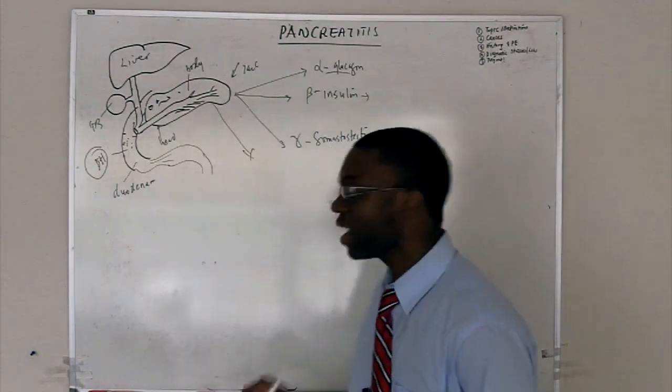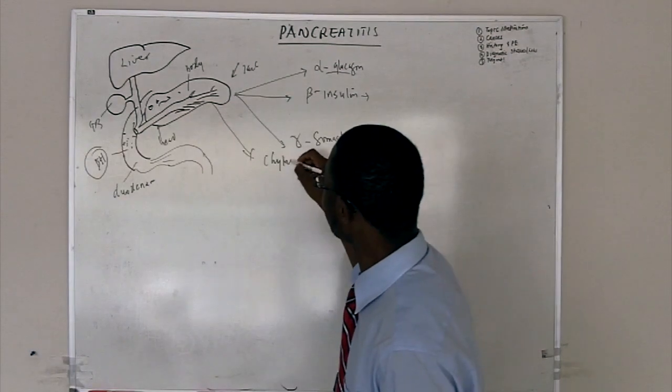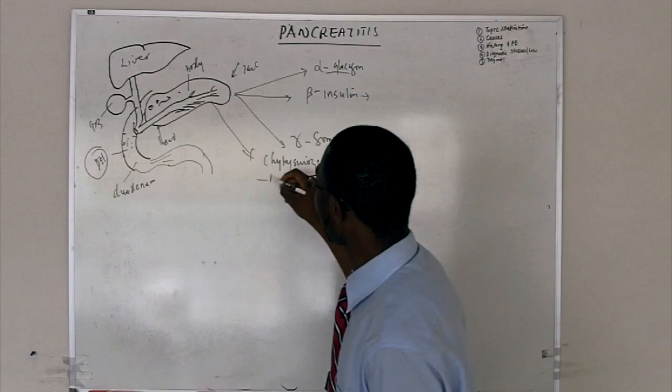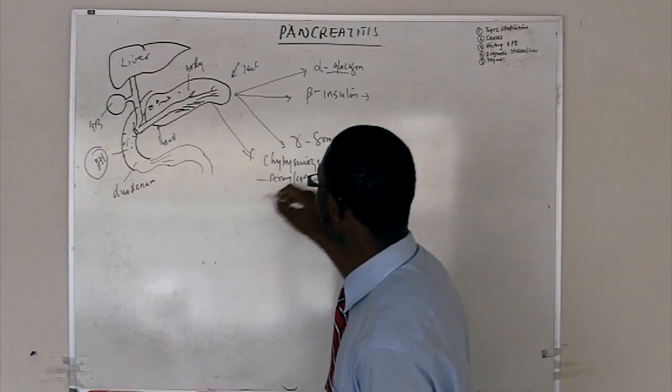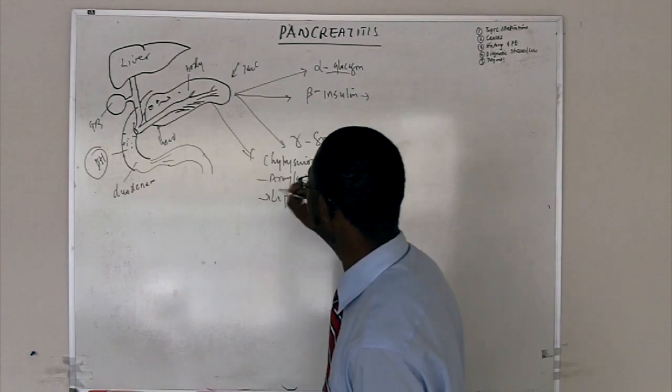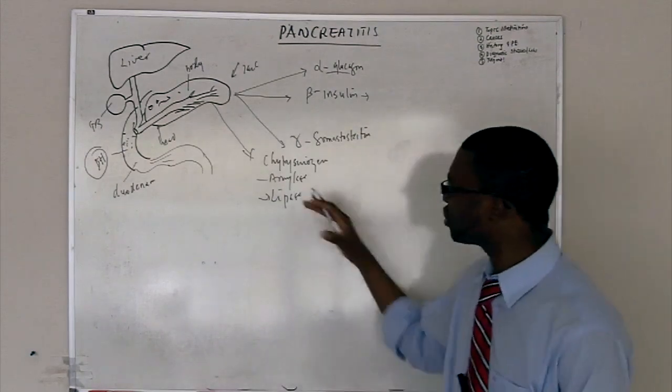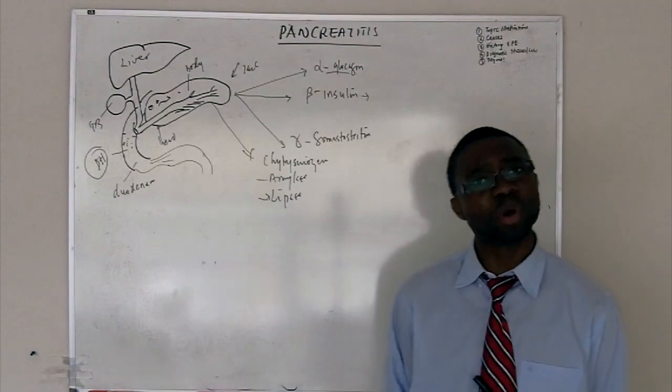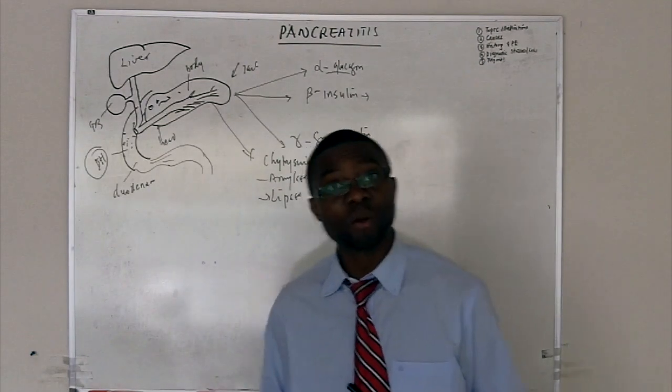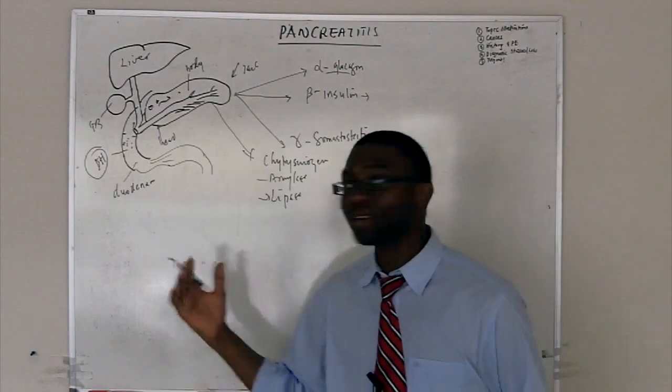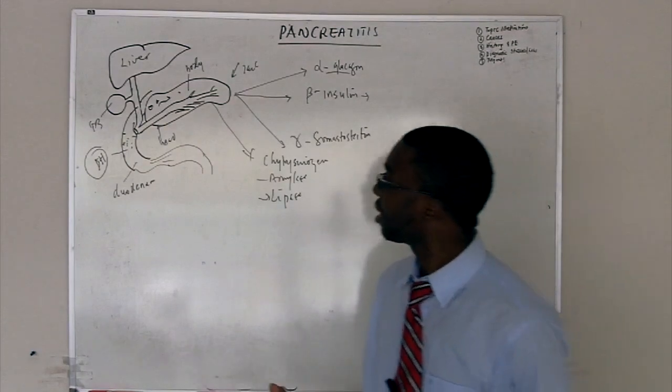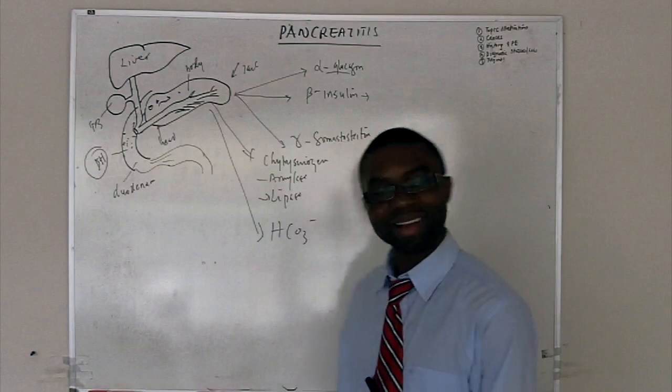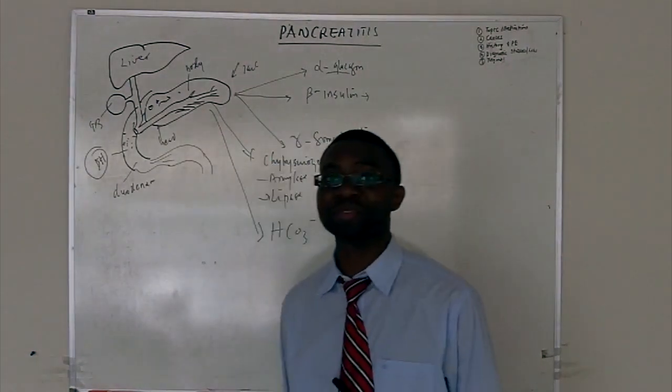Aside from that, this same juicy guy makes chymotrypsin, trypsinogen, amylase, lipase. It makes all these beautiful enzymes that it needs to break down your fat, break down your carbohydrates, break down your proteins. It also makes bicarbonate. You gotta have some respect for the pancreas.